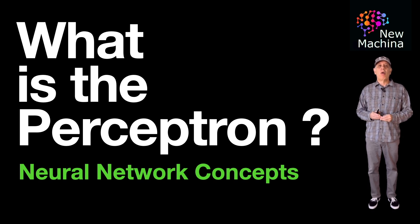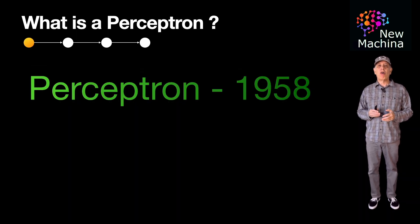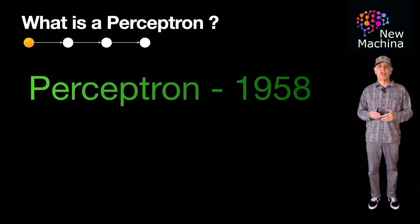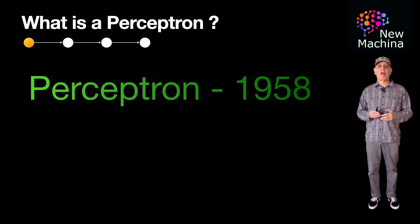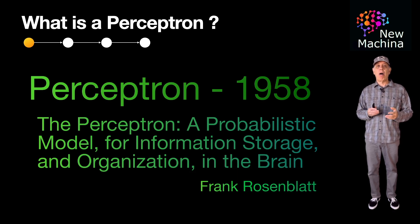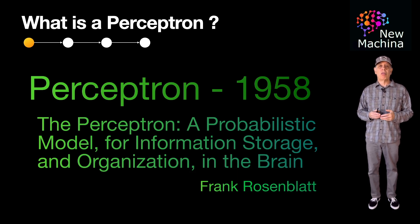So what's the perceptron? A perceptron is a simple artificial neural network model specifically designed for binary classification tasks. It was introduced by Frank Rosenblatt in 1958 as a computational model that mimics the way biological neurons function.